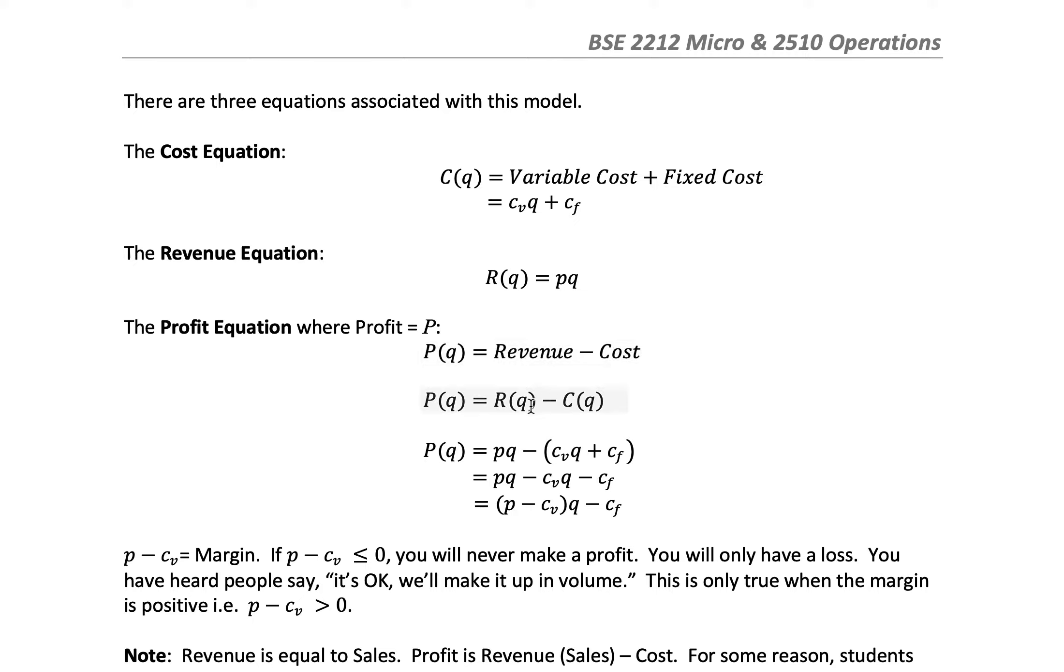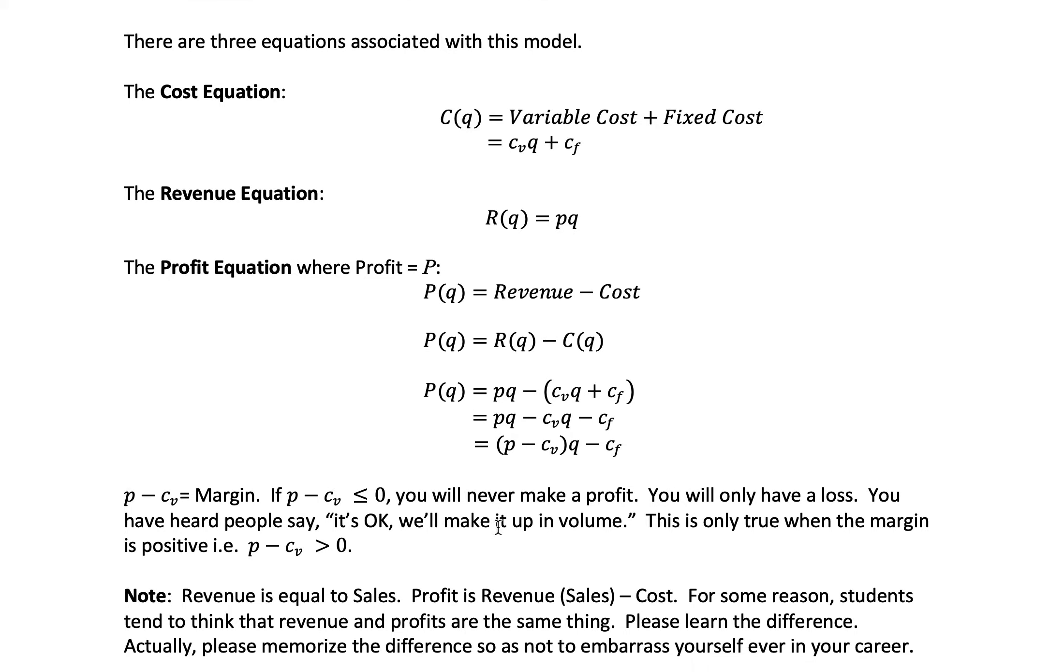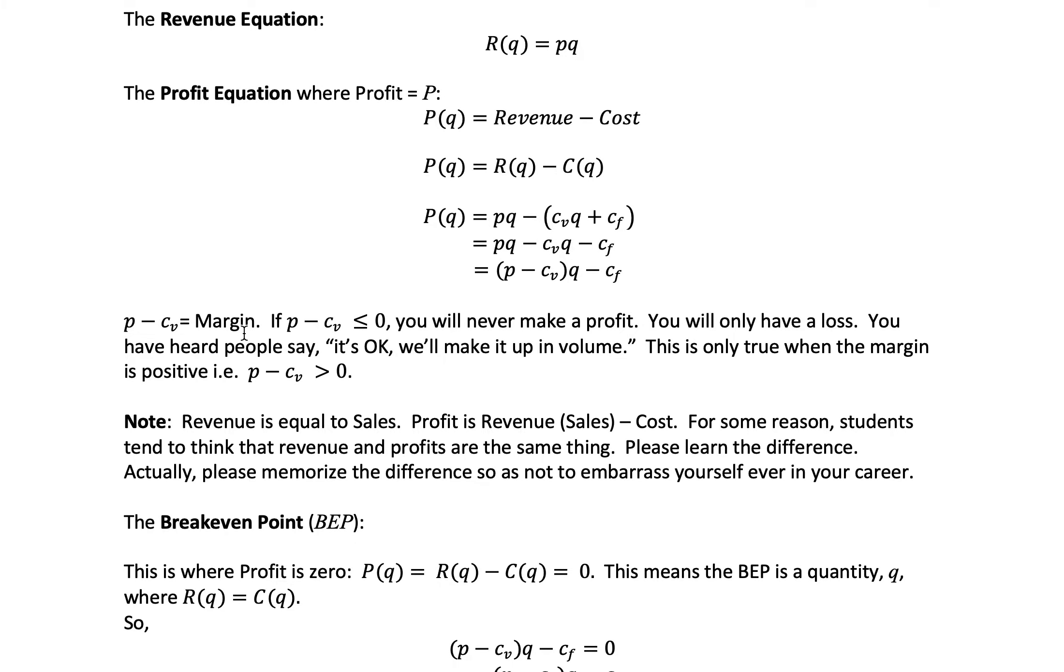Profit - notice it's capital P versus small p - is revenue minus cost. If I replace these equations, I get P times Q minus (C_v Q plus C_f). The distributive law works - I can factor Q out of these two terms. I get (P - C_v) times Q minus the fixed cost. This term here, P minus C_v, is called the margin. If this margin is less than zero, you will never make a profit. You will only have a loss. You've heard people say it's okay, we'll make it up in volume. This is only true when the margin is positive, when P minus C_v is greater than zero.